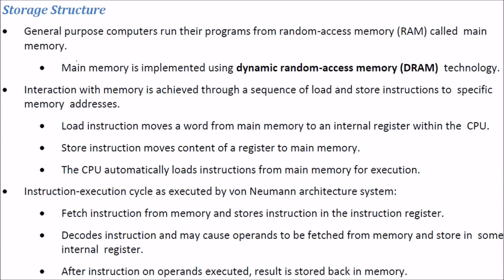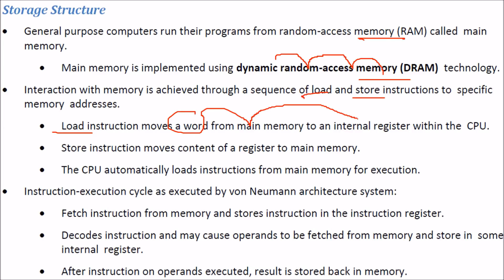General-purpose computers run programs from random access memory, also called main memory, which is implemented mostly using DRAM (dynamic random access memory) technology. When the CPU interacts with memory, it uses load and store instructions. A load instruction moves a word from main memory into an internal CPU register, while a store instruction moves the contents of a register back to memory.